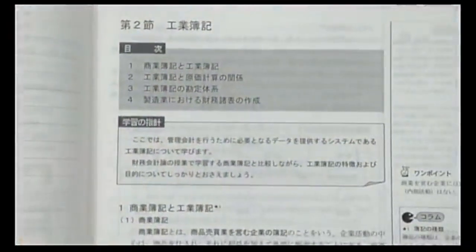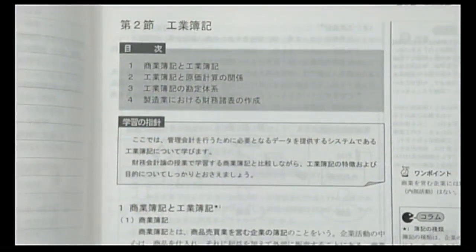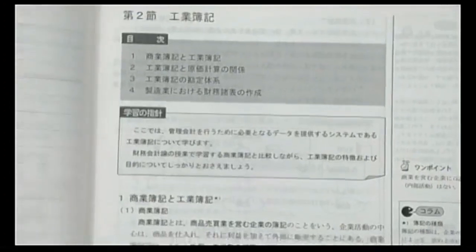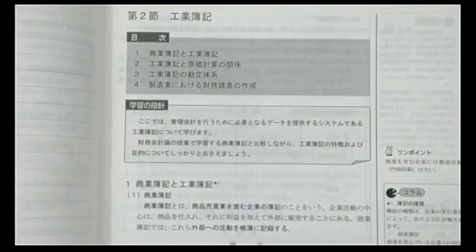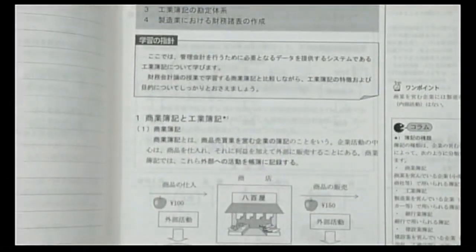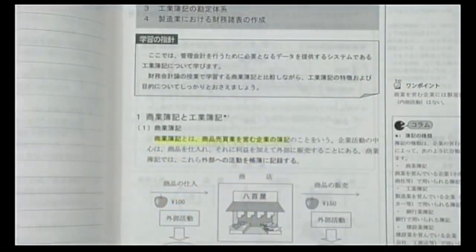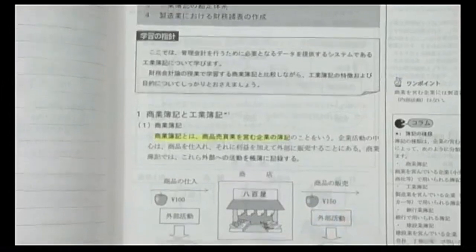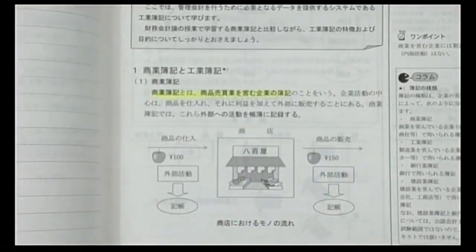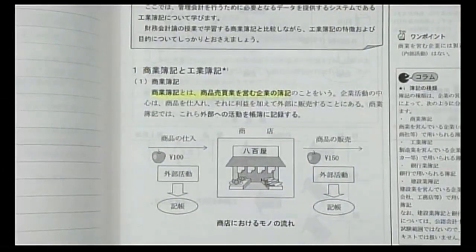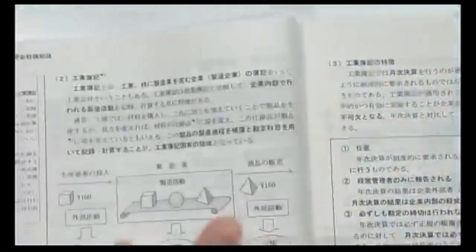3ページから5ページは飛ばして、7ページの第2節「工業簿記」から見ていきます。商業簿記は商品売買業を営む企業の簿記です。八百屋を例にすると、商品を仕入れてお客さんに販売するのが商品売買業です。工業簿記は製造業（メーカー）の簿記です。